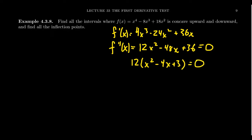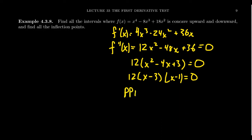This is a polynomial — it's never going to be undefined — so we need to find when it equals zero. We can factor out a coefficient of 12, leaving behind x² - 4x + 3. We need factors of 3 that add to negative four, giving us (x - 3)(x - 1), since negative three times negative one is positive three and negative three plus negative one equals negative four. So these are going to be our potential points of inflection, our PPIs: x equals 1 and x equals 3.